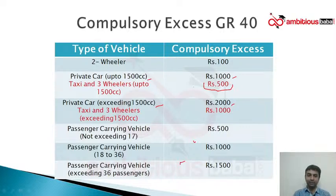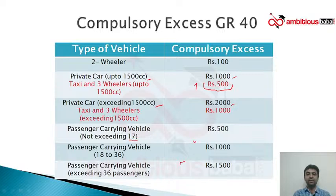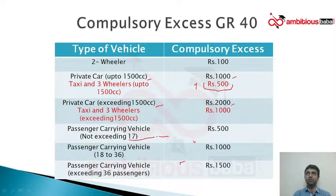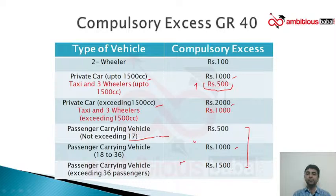Passenger carrying vehicles not exceeding 17 seating capacity — the excess is 500 rupees. Passenger carrying vehicles not exceeding 36 passengers — 1,500 rupees. So three slabs: small vehicles not exceeding 17 seaters: 500 rupees; medium buses not exceeding 36: 1,000 rupees; big buses exceeding 36: 1,500 rupees.